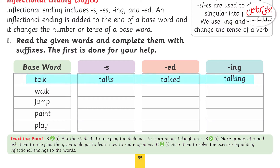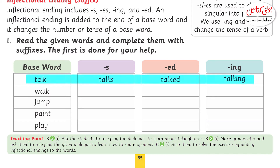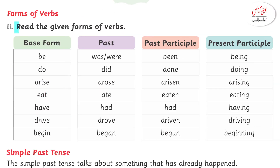Talk ke saath agar s lagaenge toh 'talks' ban jayega. Ed lagaenge toh 'talked' ban jayega. Aur ing lagaenge toh 'talking' ban jayega. Isi tarah next word hai 'walk'. S lagaenge toh 'walks', ed ke saath 'walked', and then ing ke saath 'walking'.